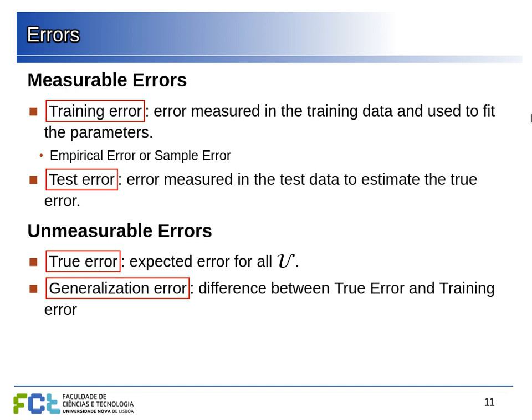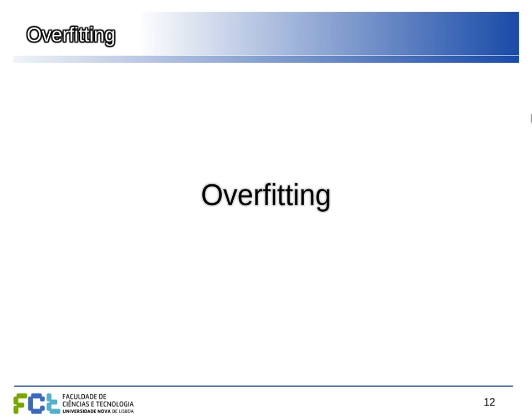For example, if you want to predict stock prices, you use part of the dataset to fit the model and part to test it, giving an estimate of how it will perform in the future — assuming the universe remains the same. The generalization error is the difference between the true error and the training error. The training error can be low while the true error is high, and this difference is the additional error we make by generalizing from our dataset to something outside.